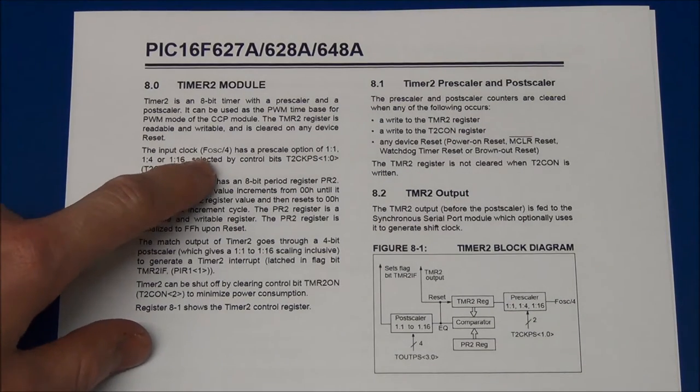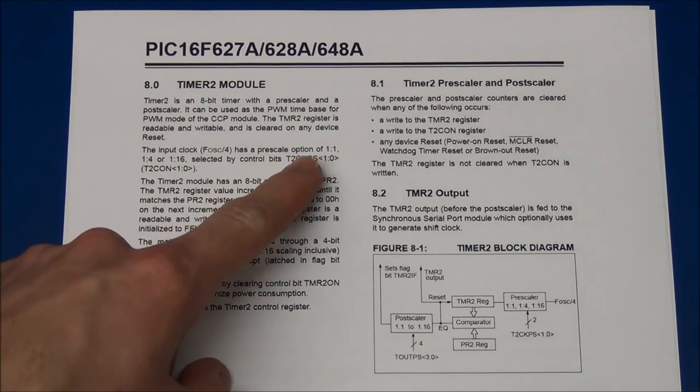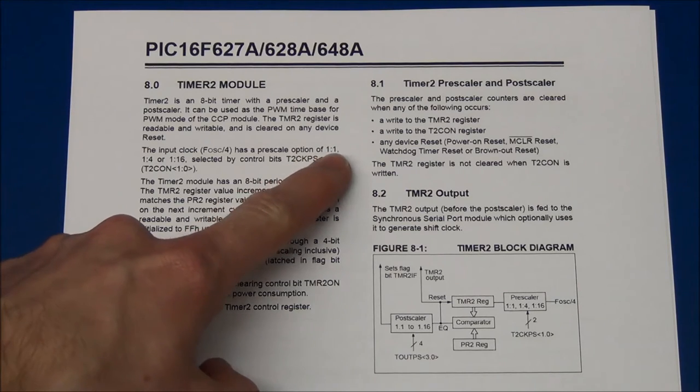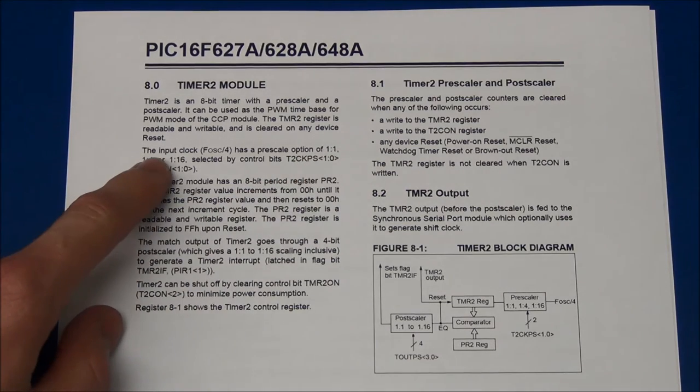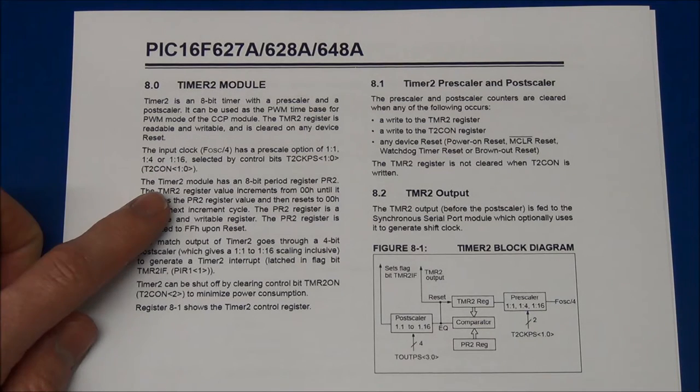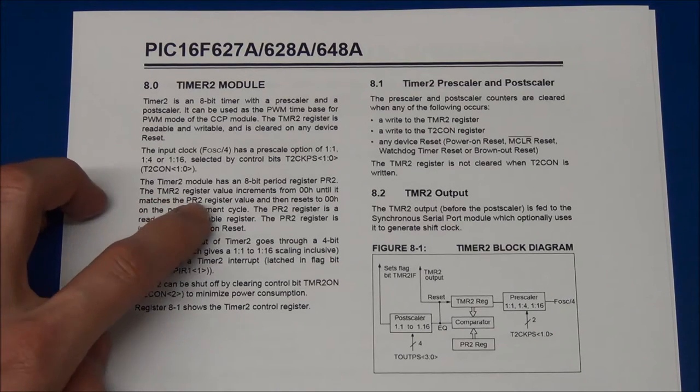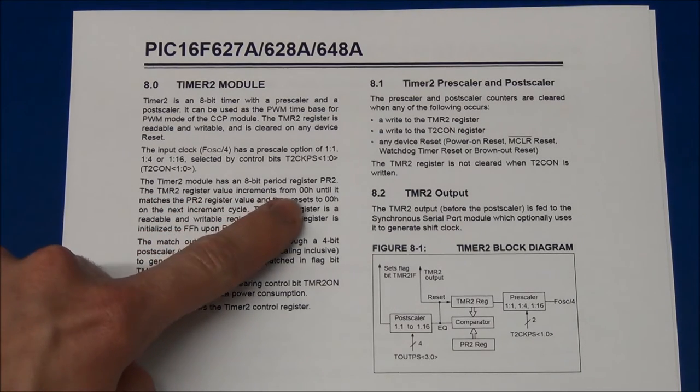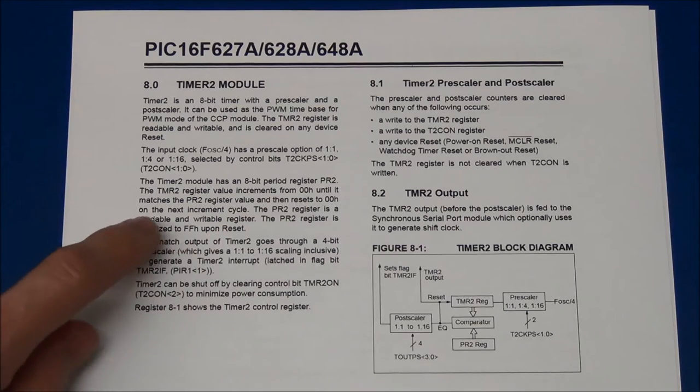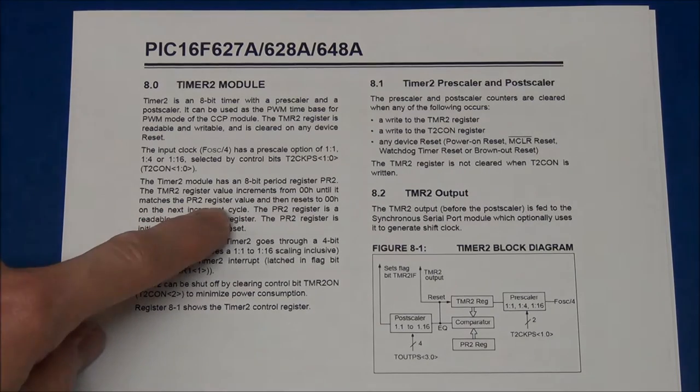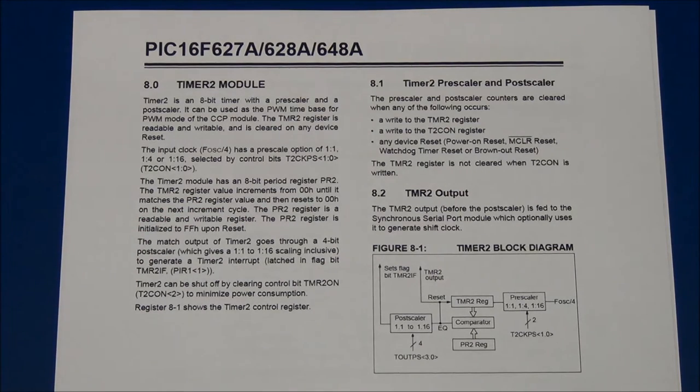The input clock is divided by 4 and it can be set to pre-scale to 1 to 1, 1 to 4, or 1 to 16. The timer 2 module has an 8-bit period register PR2. The TMR2 register value increments from 0x00 until it matches the PR2 register value and then resets to 0x00 in the next increment cycle.